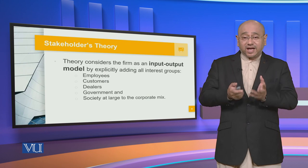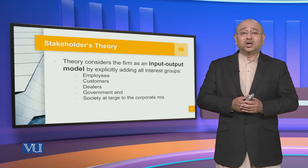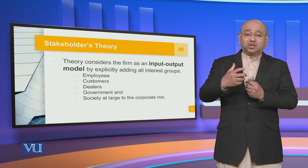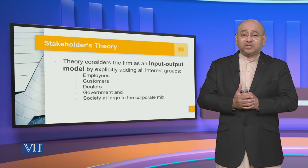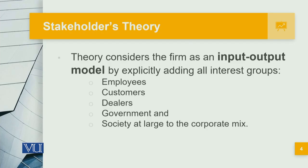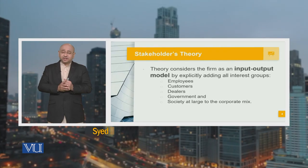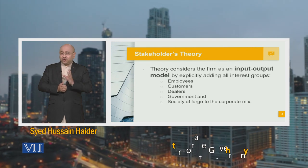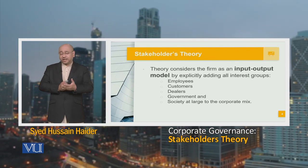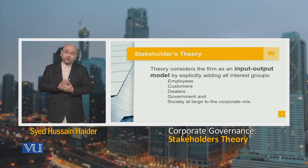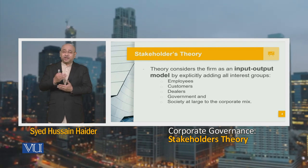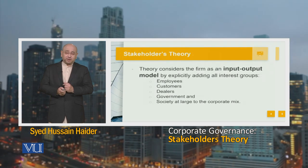This can lead to what we call an input-output model by explicitly adding all the interest groups, which include the employees on one hand, the customers on the other, the dealers, the government, and society at large as a corporate mix. So these different stakeholders have their own interests within the organization, but the shareholder tends to dominate and overshadow all of them.